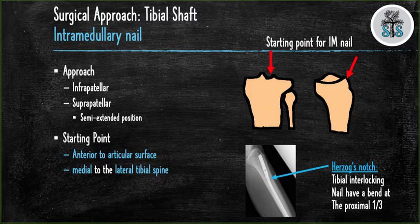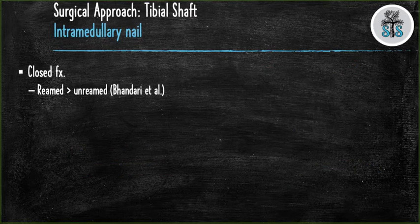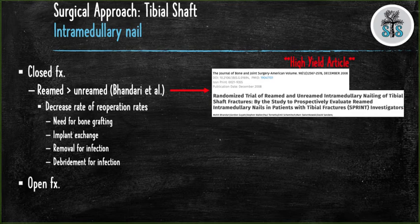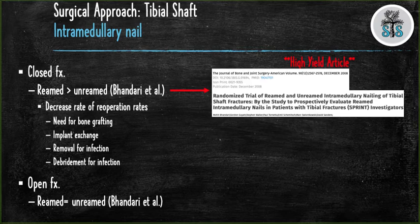Contraindications to nailing the tibia include a tibial diameter less than 6 mm, severe deformity, contaminated tibial canal, or a previous total knee arthroplasty or arthrodesis. A classic article from the SPRINT investigators demonstrated that reamed nailing was superior to unreamed nailing for closed tibial shaft fractures with a lower rate of reoperation, and showed equivalent outcomes with reamed versus unreamed nailing in open tibial shaft fractures.